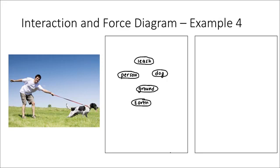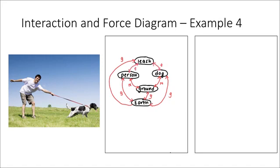I'll go ahead and start thinking about how these objects interact with each other. I always start by showing my gravitational force of attraction between the earth and all of my objects. I know in this case the person and the dog are both on the ground, so the ground will be pushing up on them with a normal force. I know that the person is holding onto a leash and there's tension in that leash — their dog is pulling them forward. So there's going to be some tension force between the person and the leash and also the leash and the dog.